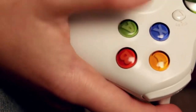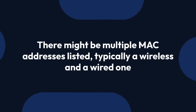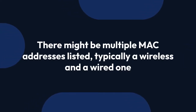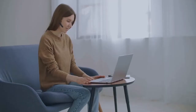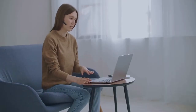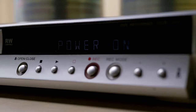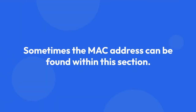Write it down — you'll need it. Note that there might be multiple MAC addresses listed, typically a wireless and a wired one. Use either, but be consistent. If you can't find your MAC address through the Network Settings method, you can always look in the About section, which provides additional information including the console's serial number, and sometimes the MAC address as well.